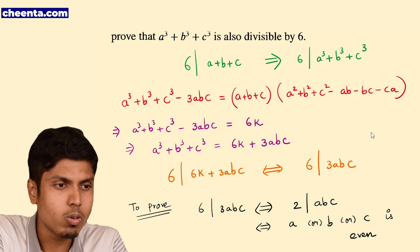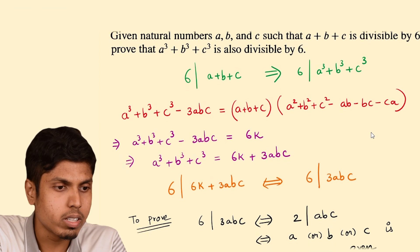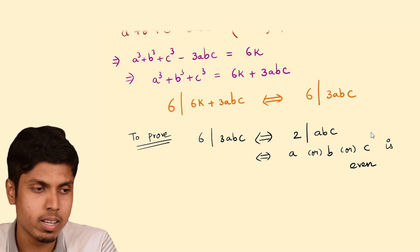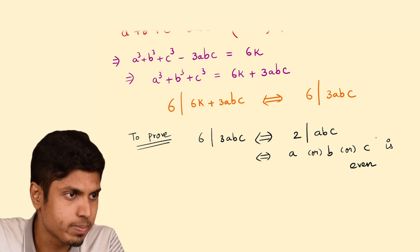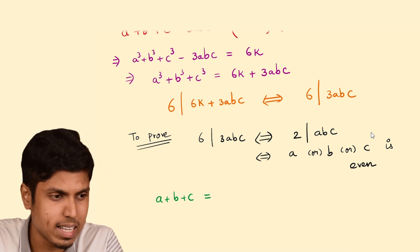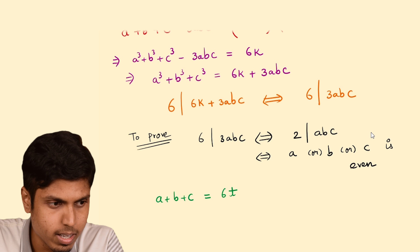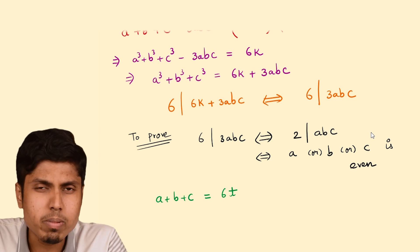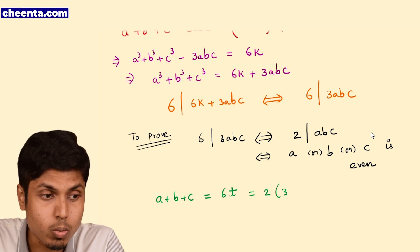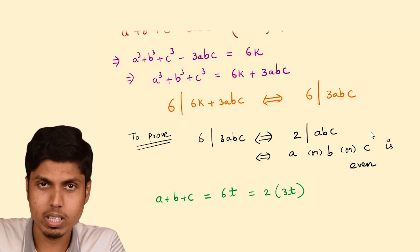So how to conclude whether A, B, C are even? Let's go back to the first condition that A plus B plus C is a multiple of 6. Let's say 6t. So clearly A plus B plus C is even because 6t is nothing but twice of 3t. So it is even.